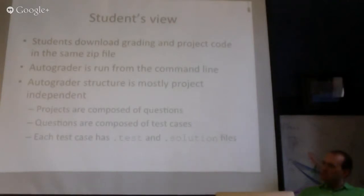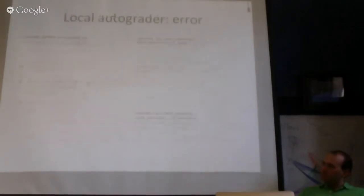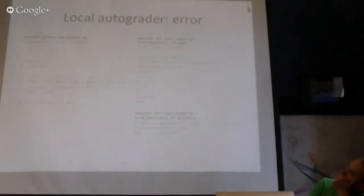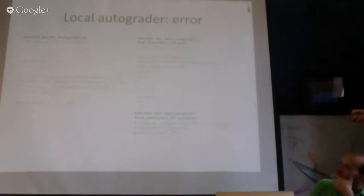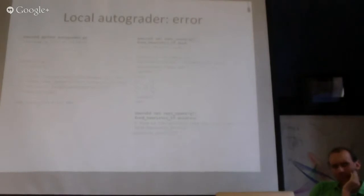An automatically generated solution file is produced by running the reference solutions through all the tests, and whatever the reference solution outputs is defined as correct. Basically, you run Python autograder and it will autograde the code in that directory. There's a section for each question. For example, question seven: it passed one test but failed seven tests — a heuristic test failed an inadmissibility check — so the student gets zero out of four.